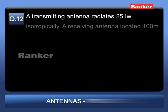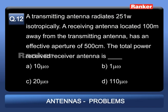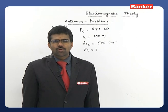Problem 12: A transmitting antenna radiates 251 W isotropically. A receiving antenna located 100 m away has an effective aperture of 500 cm². The total power received at the receiving antenna is: Option A: 10 μW; Option B: 1 μW; Option C: 20 μW; Option D: 100 μW.